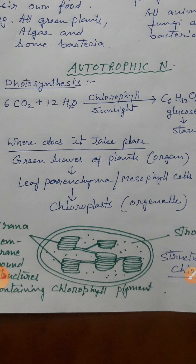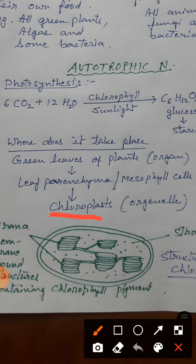Aap mesophyll cell ke kis hissay mein hota hai? To chloroplast mein hota hai. Chloroplast is also known as kitchen of the cell — jahan food banega, vohan kehte hain kitchen. To chloroplast is the cell organelle, yeh cytoplasm mein paya jata hai, yeh green color ka organelle hai, yahaan par photosynthesis hota hai. Aapne class 9th mein padha tha plastids — there are three types: chloroplasts, chromoplasts and leucoplasts. Jis mein se chloroplasts green color ka hota hai.